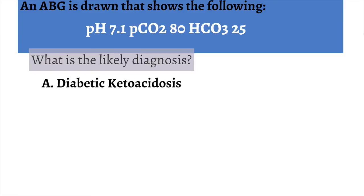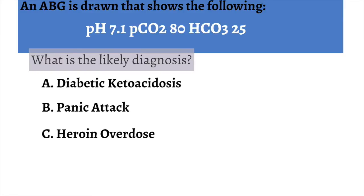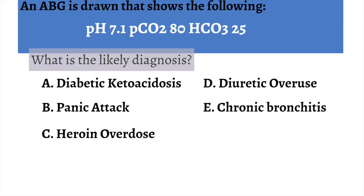Is it A, diabetic ketoacidosis; B, panic attack; C, heroin overdose; D, diuretic overuse; or E, chronic bronchitis?